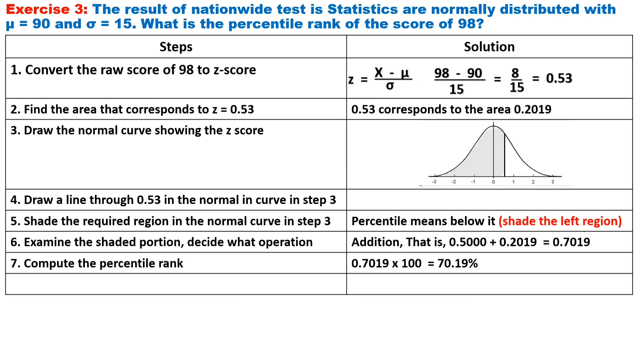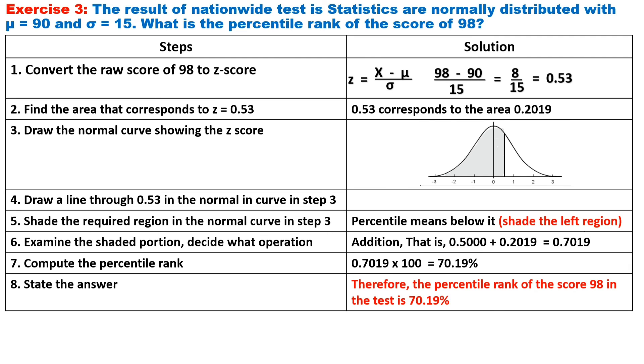Step seven, compute the percentile rank by simply multiplying it by 100 or simply move the decimal two places to the right. So we have 70.19 percent. And last step, state the answer. Therefore, the percentile rank of the score 98 in the test score is 70.19 percent.